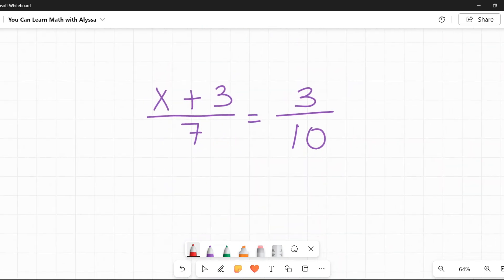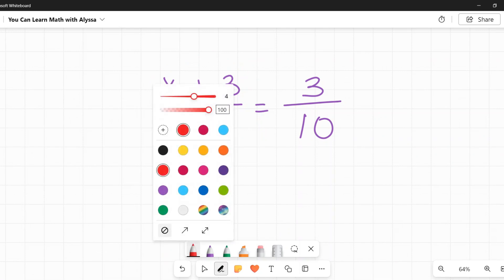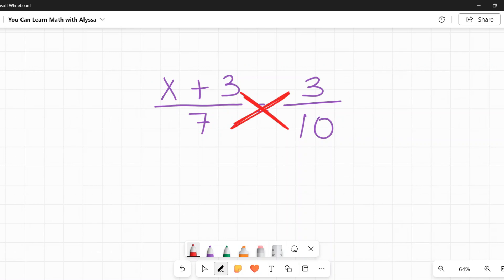This works even if it is a slightly more complicated equation where I have a binomial up here. You're going to follow the same procedure. I'm going to cross multiply. So here I have 10 times x plus 3.